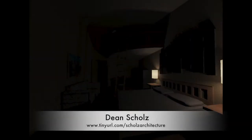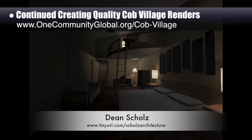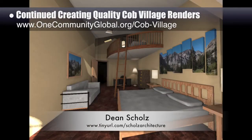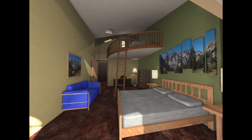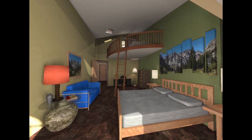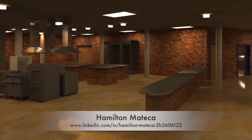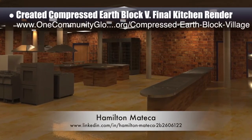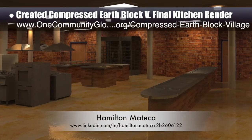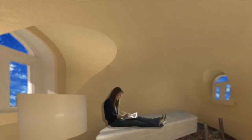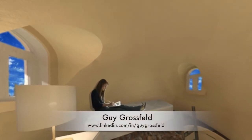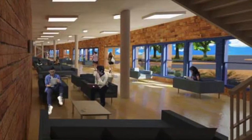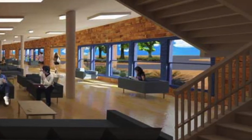Dean Schultz, architectural designer, continued helping create quality Cobb village pod 3 renders. This is update 58 of Dean's work, developing a progression of 37 images for the room furniture and lighting for the east side living spaces — the final seven images are new from this week. Hamilton Matika, AutoCAD and Revit drafter and designer, also finished his 33rd week helping with the compressed earthblock village pod 4 design and render details, focusing on producing the final kitchen render looking northwest. Guy Grossfeld, graphic designer, created the final Cobb village west living space loft area and a second generation compressed earthblock village front area looking southeast render.